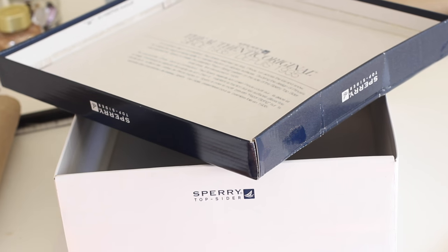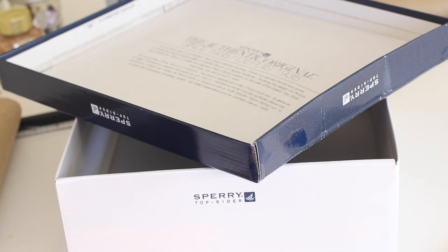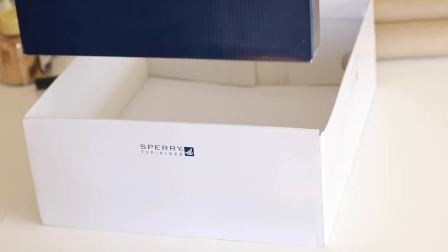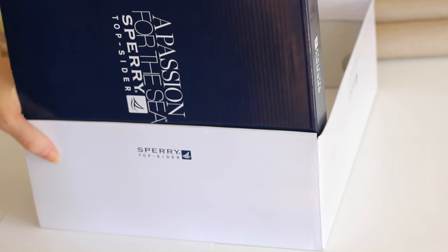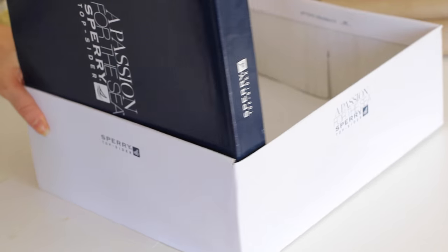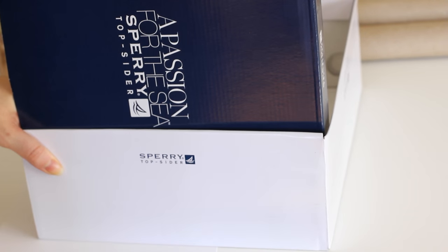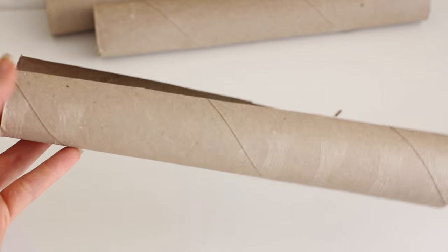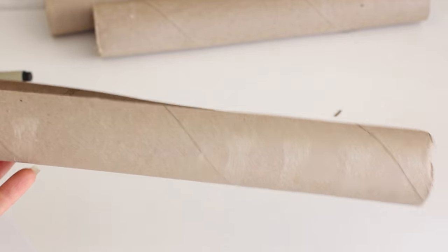So for this DIY you're just going to need a shoebox and a few different size paper towel rolls. Put the lid inside of the box to make sure that it fits properly. You can cut it if you need to, and then you're going to start sizing up the different rolls.